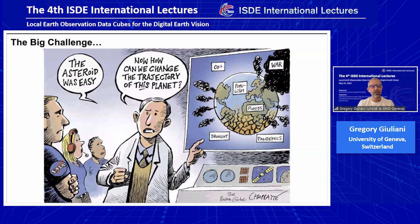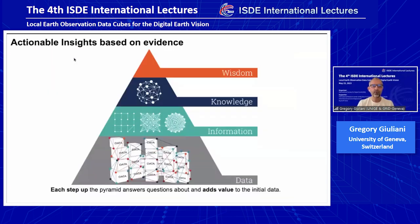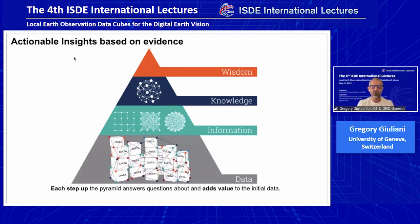If we look globally, I think we have a big challenge to face: how we can change the trajectory of our planet, especially in terms of environmental trajectory. A couple of months ago we were able to change the trajectory of an asteroid, but now we really need to change the trajectory of our planet from an environmental but also a social point of view. To that end, we think that this data-to-information-and-knowledge paradigm is really helpful to support decision makers and provide them actionable insights based on evidence. Data is any type of measurements coming from satellites, from in-situ sensors, from citizen scientists, and so on.